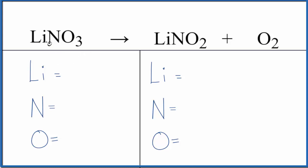Let's count the atoms up. One lithium, one nitrogen, and three oxygens in the reactants. Product side: one lithium, one nitrogen, and two oxygens. But don't forget these two. We need to add those in for four total oxygen atoms.